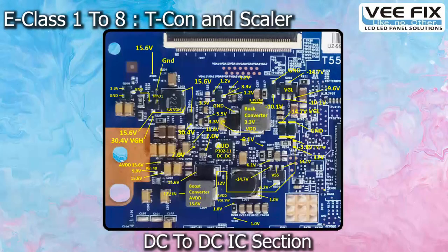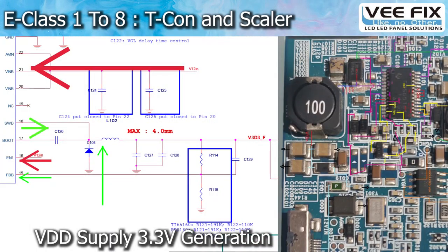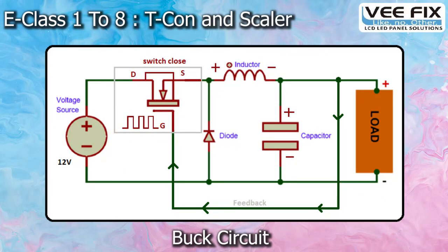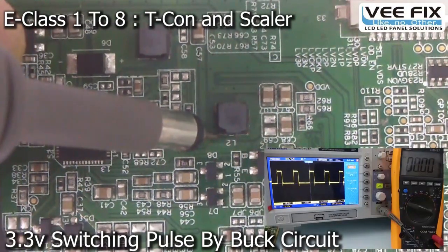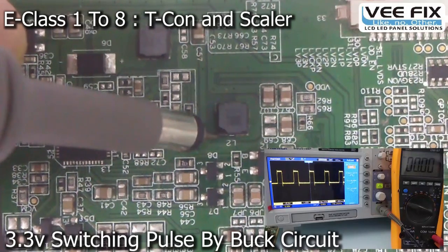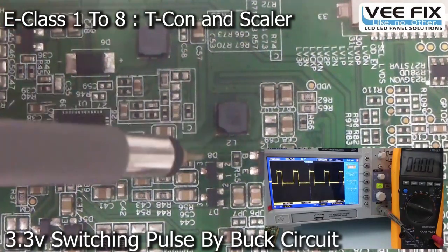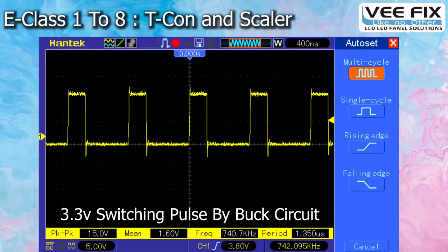After the LVDS connector, we will start with the DC to DC IC section. The first step is the creation of 3.3V from the panel supply. This 3.3V is basically a supply voltage for the T-con IC and the EEPROM of the T-con IC. This 3.3V is created using the buck circuit, where the DC to DC IC supplies a switching pulse and a combination of inductor coil and diode creates the 3.3V. We will give you a complete practical explanation of the working function of the buck circuit.